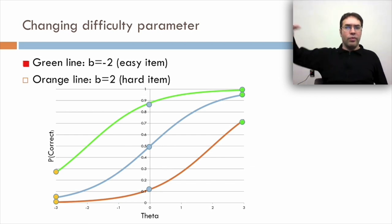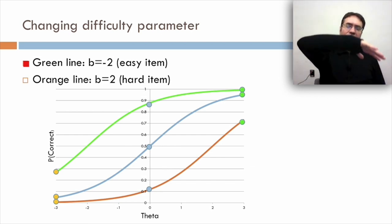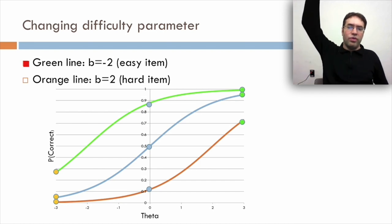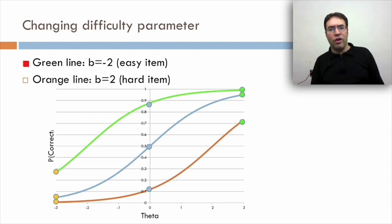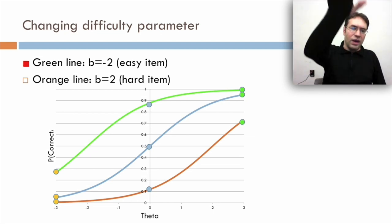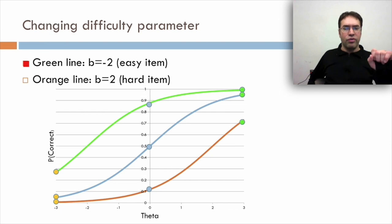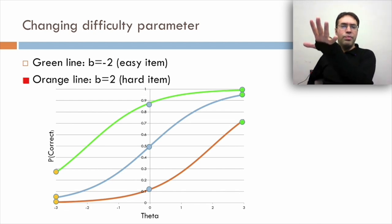Now if we change the difficulty parameter, we get different lines. The green line with b equals negative 2 is an easy item. The student with theta of 3 doesn't improve much, but the student with theta of 0 goes up from 50% to 88%, and the student with theta of negative 3 goes up from 5% to almost 30%.